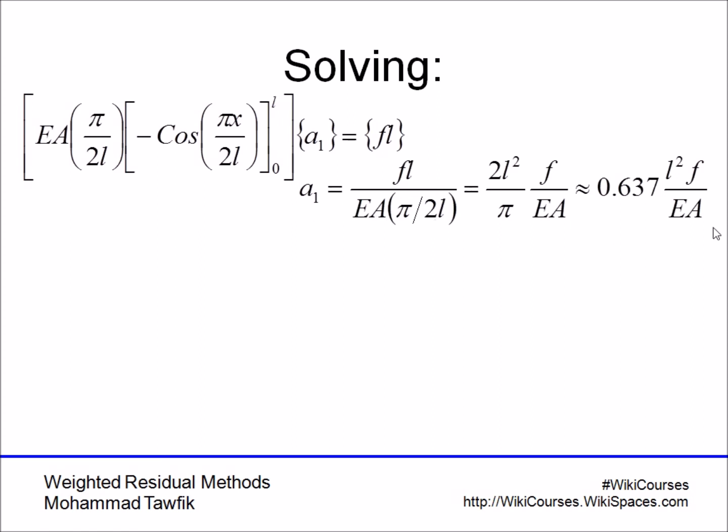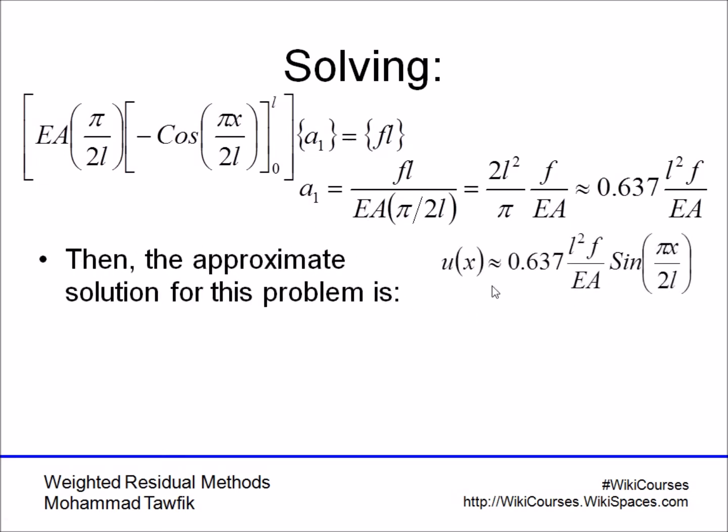Now, you can solve this single equation in a single unknown, A1, to get that u of x is equal to 0.637. Remember, in the collocation method, we got 0.57.